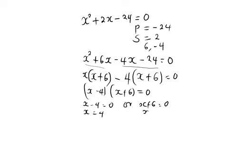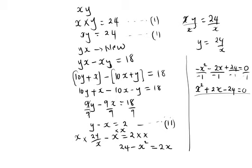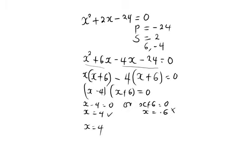We ignore the negative value of x because we are told it is a positive two-digit number. So the value of x is supposed to be 4. We can substitute in the previous expression of y to get the value of y. So we are told that y equals 24 divided by x.